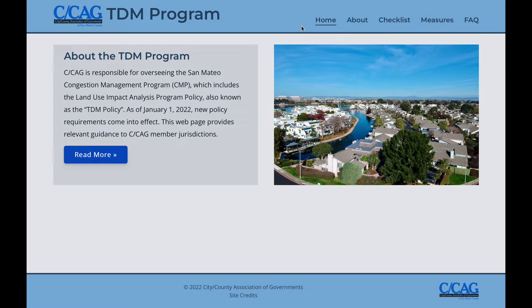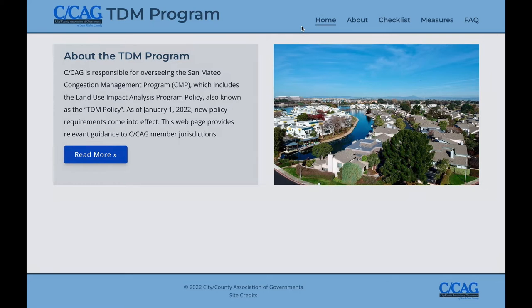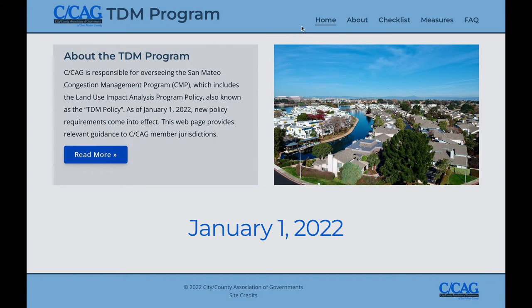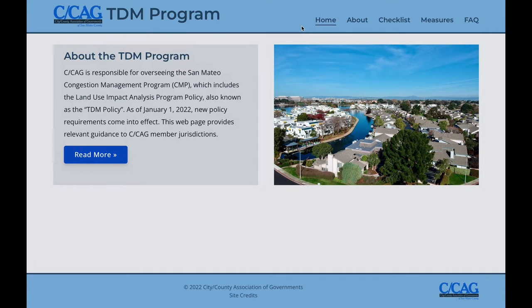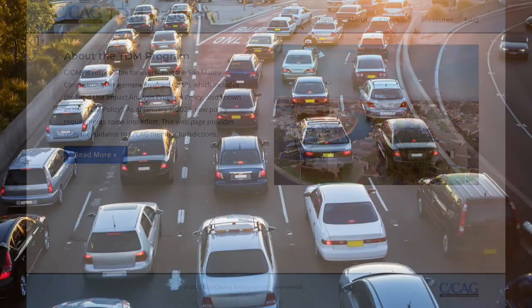Here we provide an overview of the website ccagtdm.org. The CCAG Transportation Demand Management website, TDM for short, is a dedicated online resource for the CCAG TDM Policy, which was recently updated by CCAG Board approval in September 2021 and became effective on January 1, 2022. The TDM Policy also goes by another official title, Land Use Impact Analysis Program, which is one chapter of the more comprehensive congestion management program also overseen by CCAG. The purpose of the TDM Policy is to facilitate the movement of people on the congestion management network rather than simply vehicles.